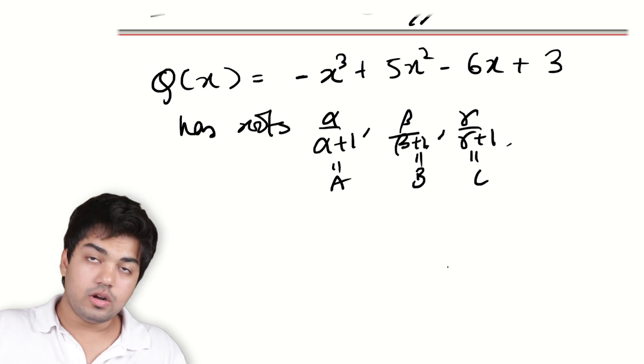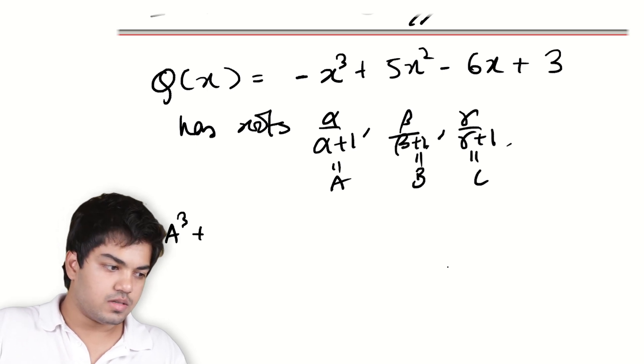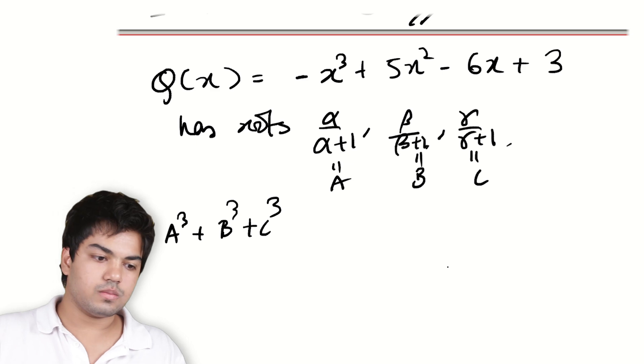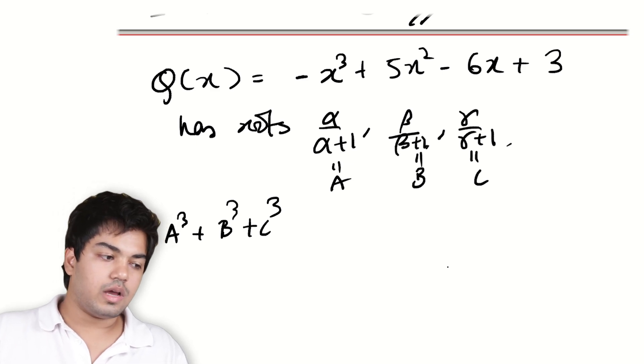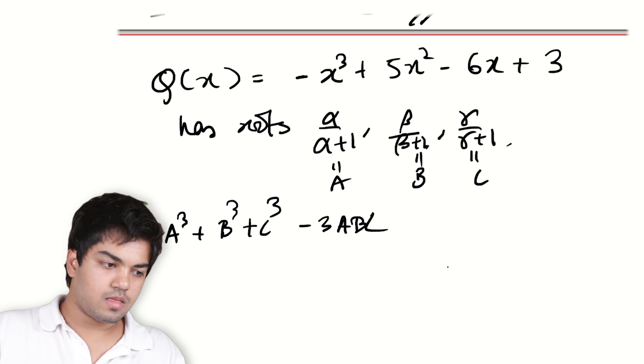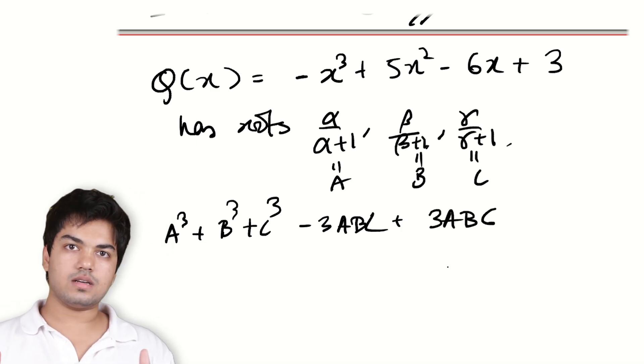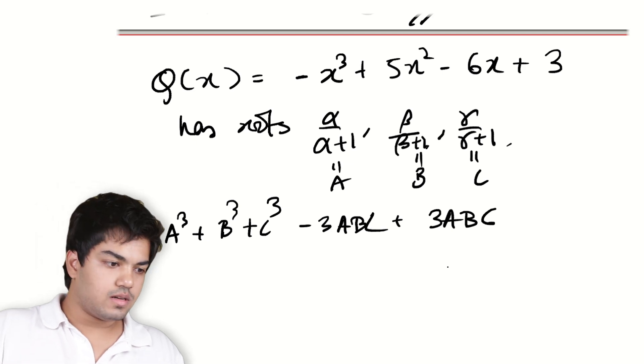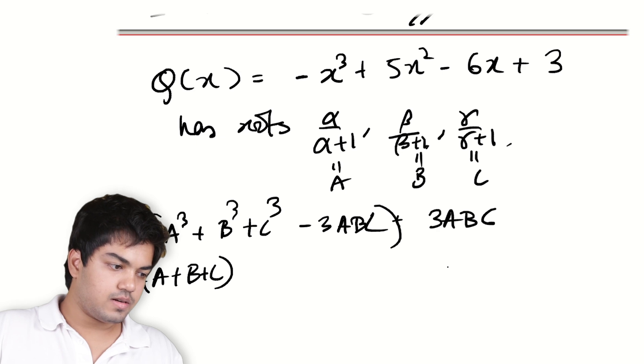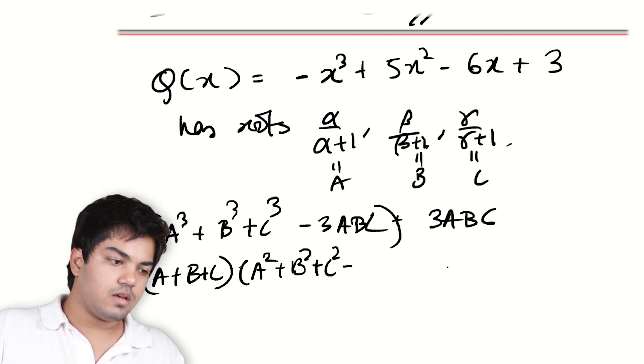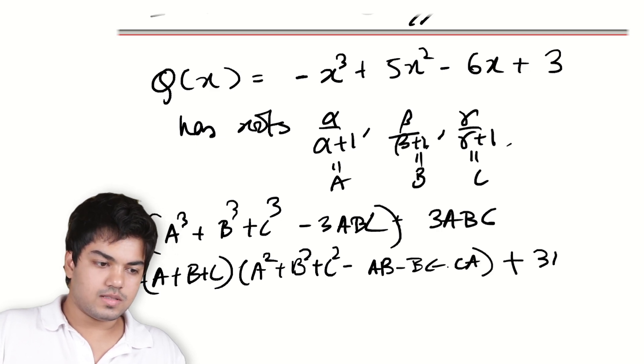Now I want to find A³ + B³ + C³. This is where our trick from the beginning will come into play. I want to find this. Instead, I will find this. What's the advantage? I get everything in terms of those Vieta symmetric polynomials. Right? This thing by the factorization is (A + B + C) times (A² + B² + C² - AB - BC - CA) plus 3ABC.